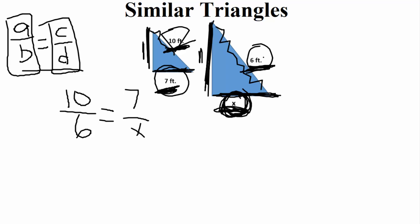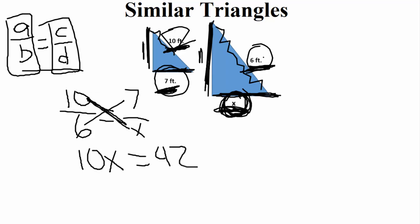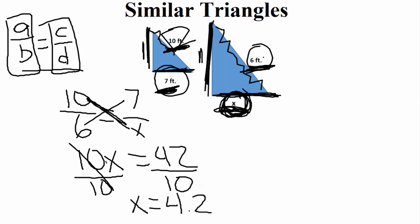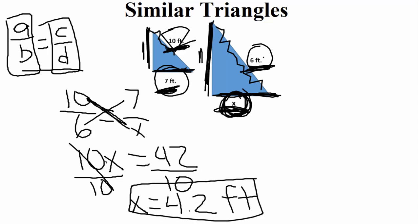Once we have the proportion set up, it's a matter of cross multiplying. Cross multiplying means multiplying our diagonals and setting them equal to each other. That gives us ten times x equals six times seven, which is 42. These are always one-step equations. We do the opposite of multiplication and divide both sides by ten. The ten cancels out, and we're left with x equals 4.2. Our units were in feet, so the solution is 4.2 feet.